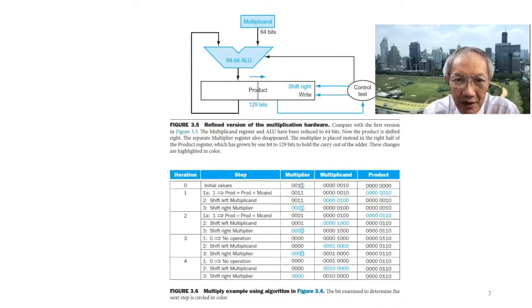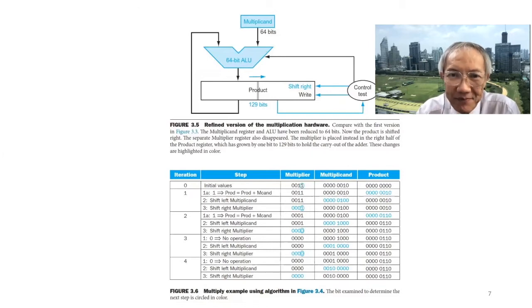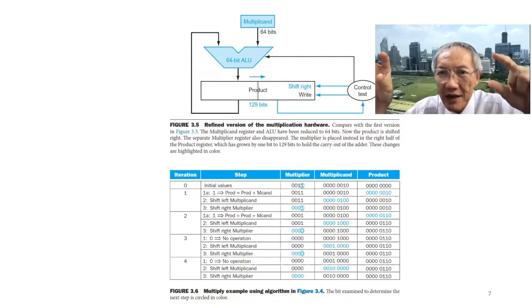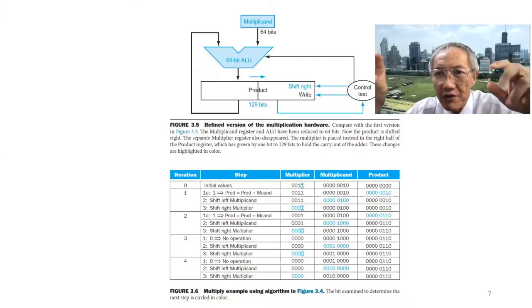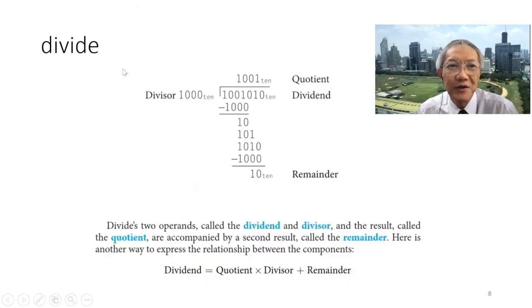You can see the detailed step-by-step operation in the diagram. You can also simulate this using a high-level language, representing numbers as arrays of ones and zeros or as strings, since shifting is easy to simulate in software.